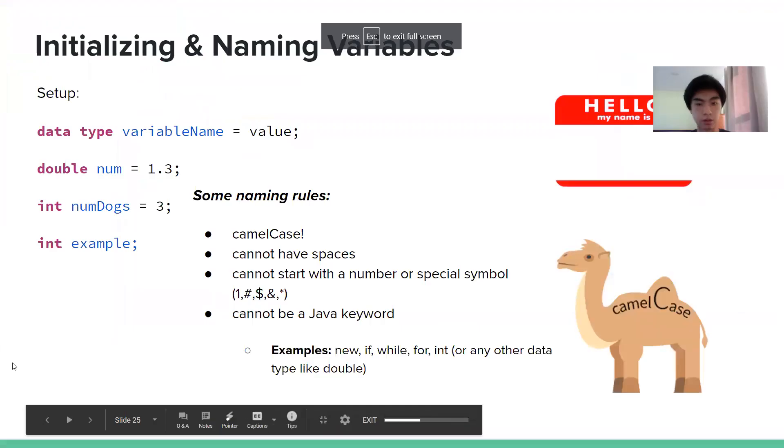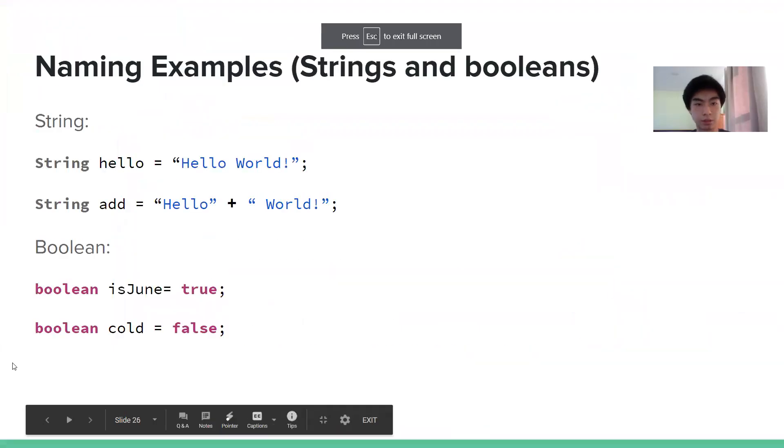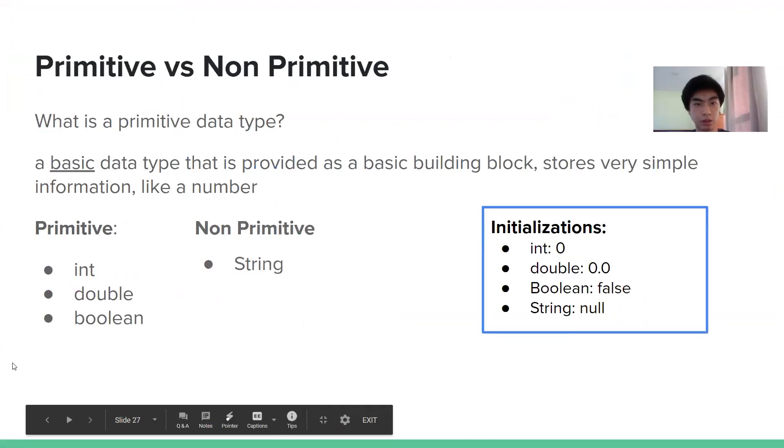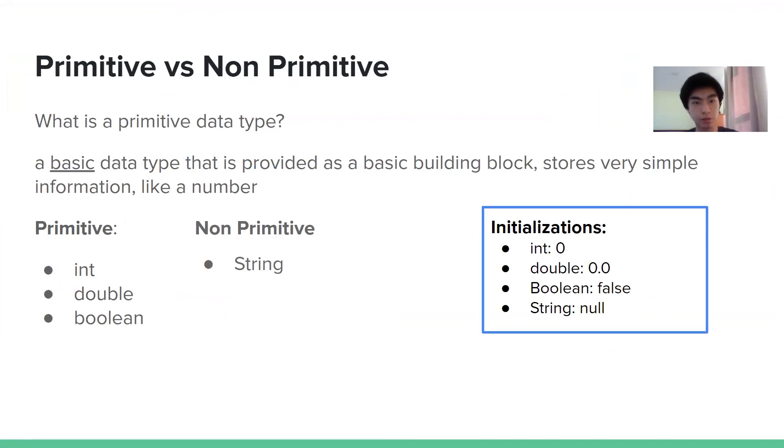Okay, so yep, here are some examples that we just went over in Eclipse. Okay, so now primitive versus non-primitive. So primitives include, so far what we learned, int, double, Boolean. Again, there are more primitives, we're just not going to learn about them.